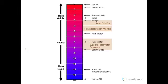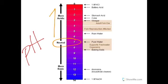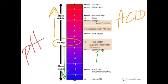We also have things called buffers, which are just weak acids or bases that react to strong acids or bases to prevent sharp, sudden changes in pH. So this is our pH scale. Remember: anything that's 7 is neutral. Anything below 7 we're going to call an acid or acidic. Anything above 7 we're going to call a base or basic. Another word for a base is also alkaline — just a good word to know.